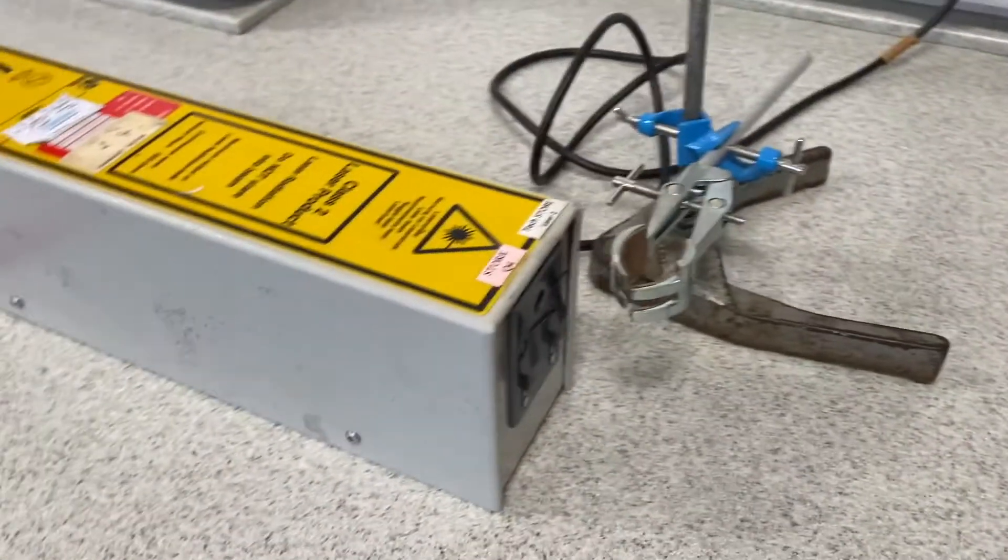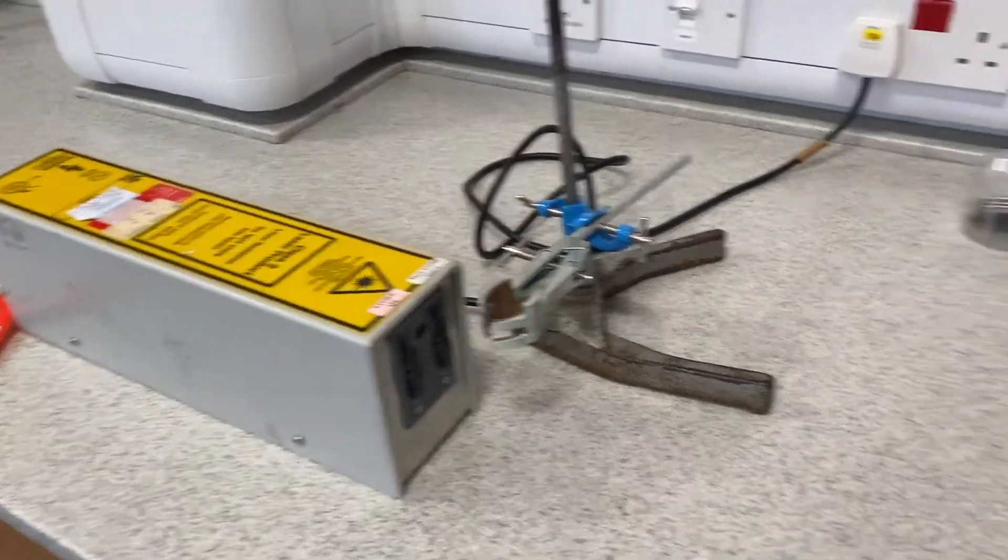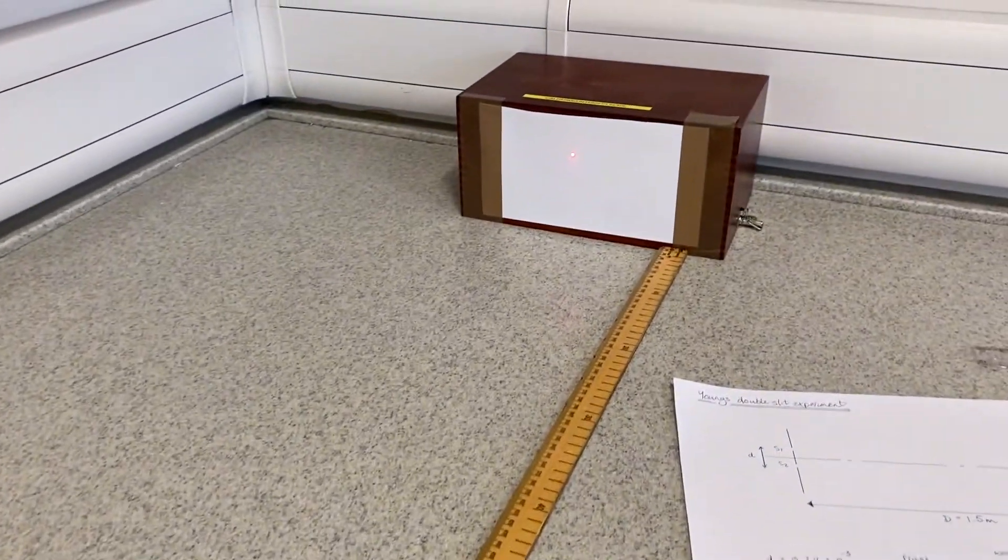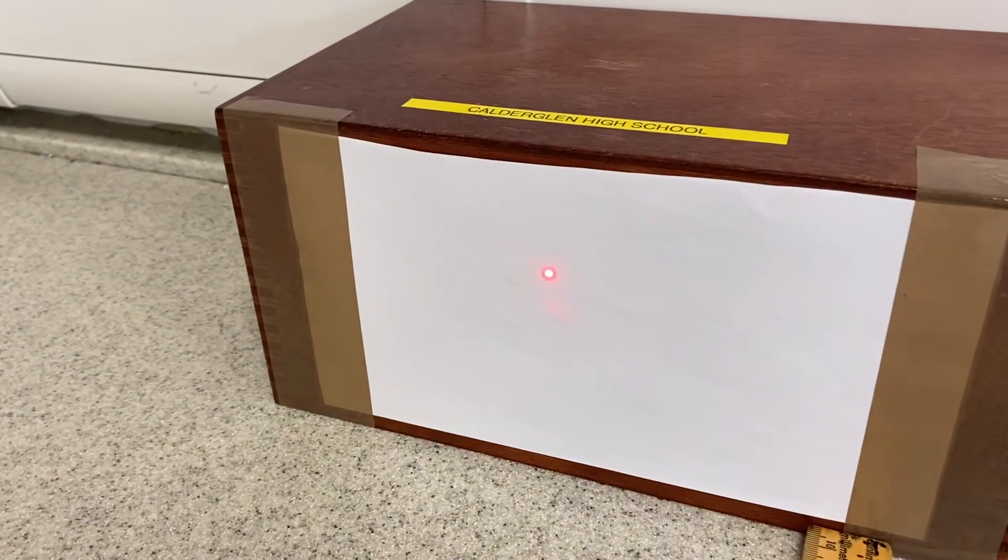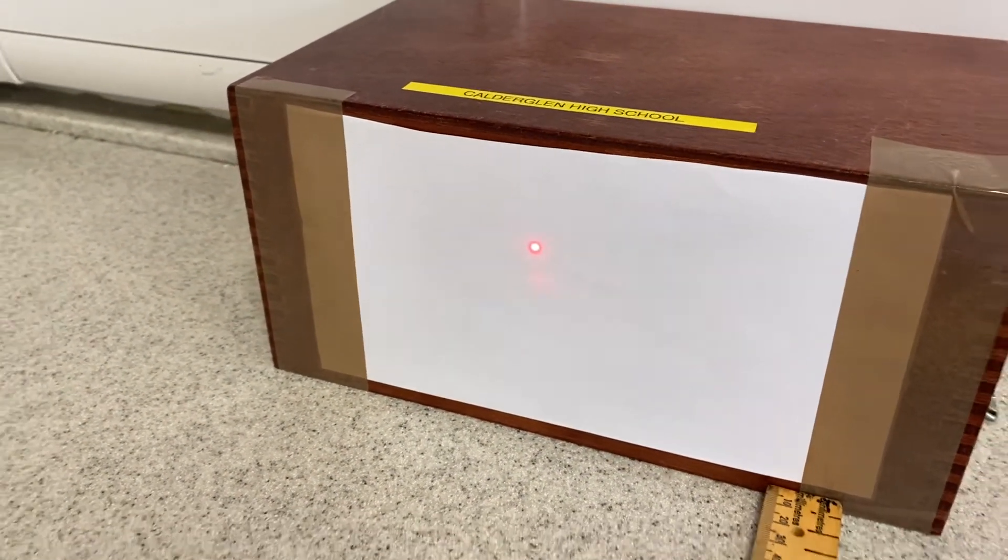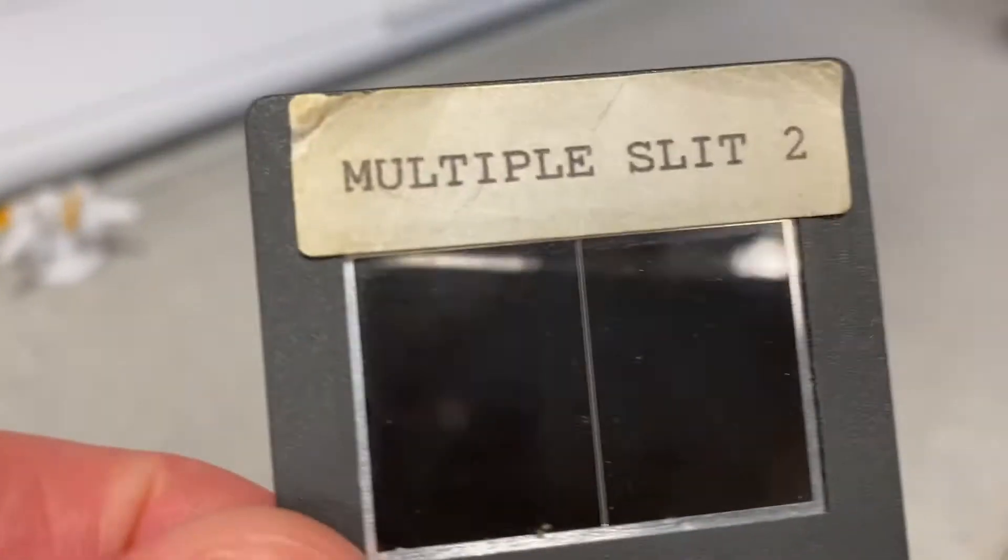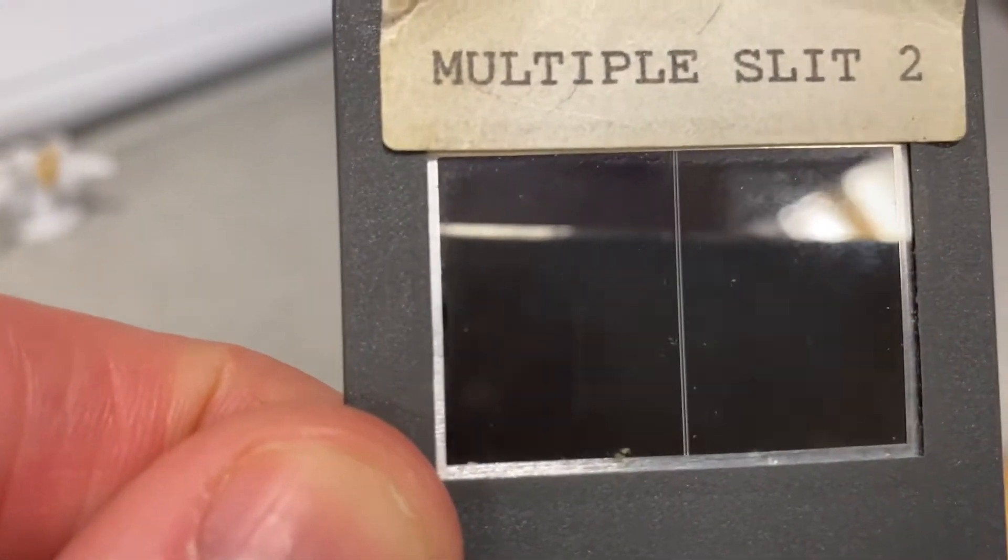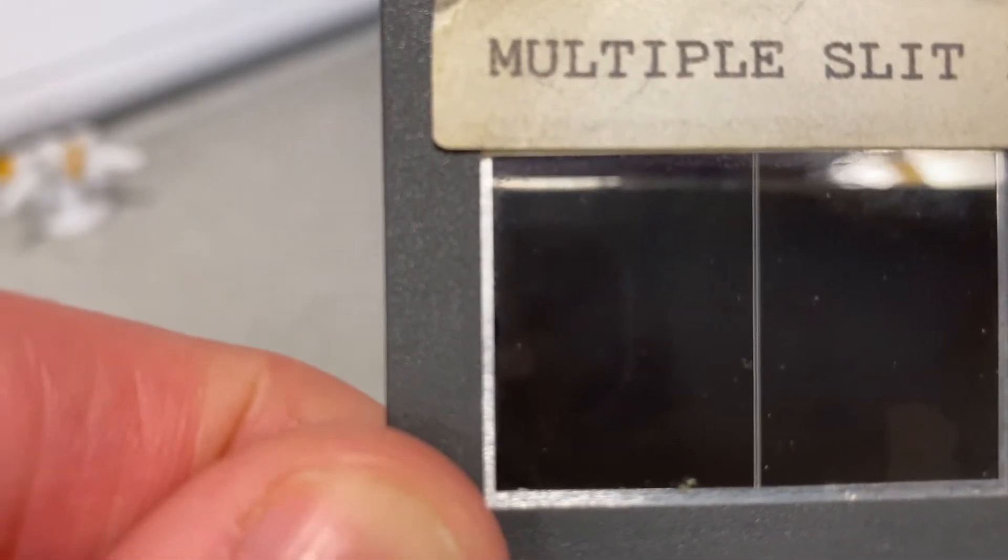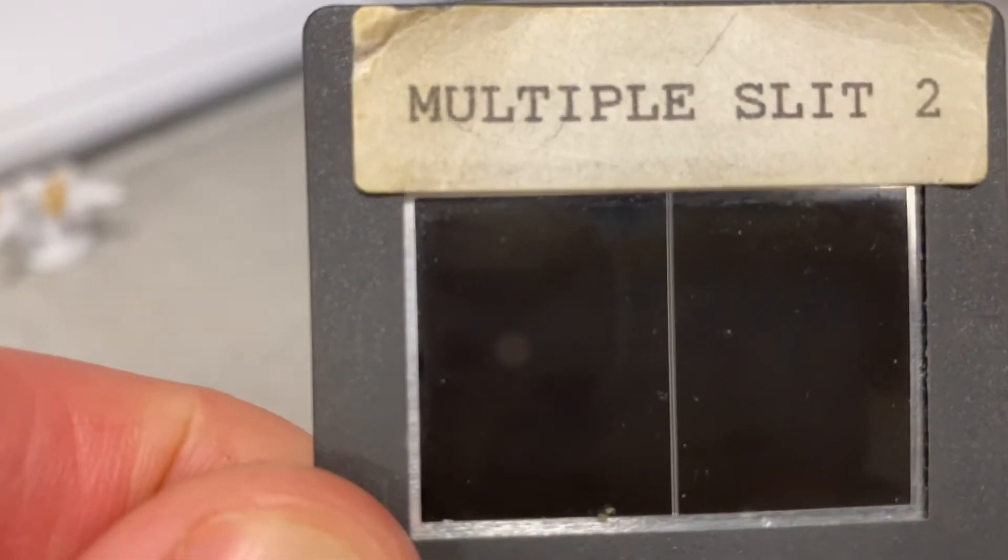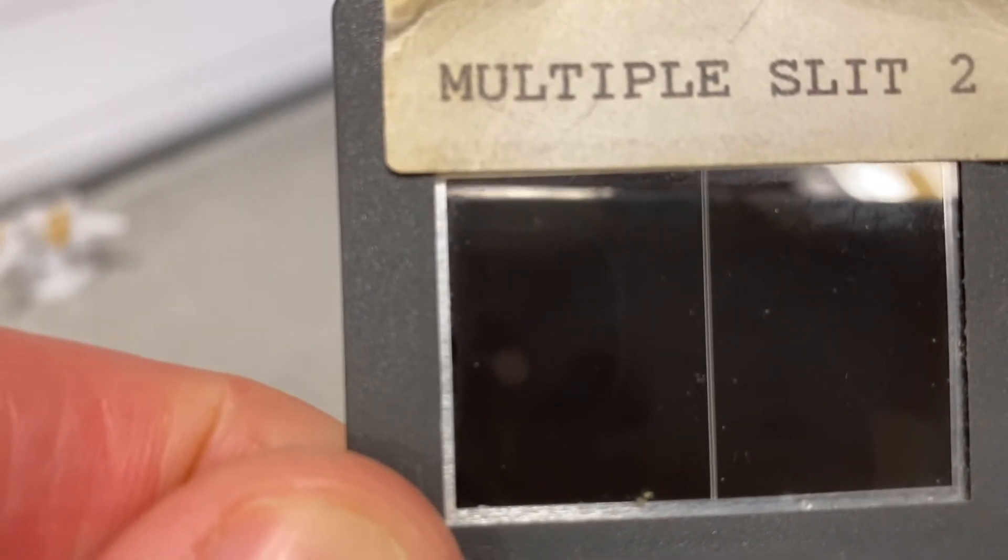When we put this double slit in front of our laser, the laser is shining at a screen. There's a single dot on the screen right now, and the question is: what happens when we put the double slit in front of it? Most people would think you're going to see two spots on the screen because there are two slits. But of course, that's not what you see.